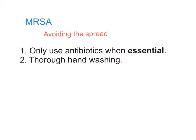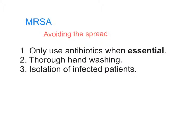Secondly, thorough hand washing in hospitals, so that a nurse or a visitor doesn't transmit MRSA between a patient who might be infected and one who isn't. Thirdly, if a patient does become infected, they should be put into an isolation ward, away from other patients, to make it less likely to spread. Fourthly, wards need to be cleaned really well at all times — not just if there's an outbreak of MRSA, but at all times to ensure that bacteria don't spread through the wards.